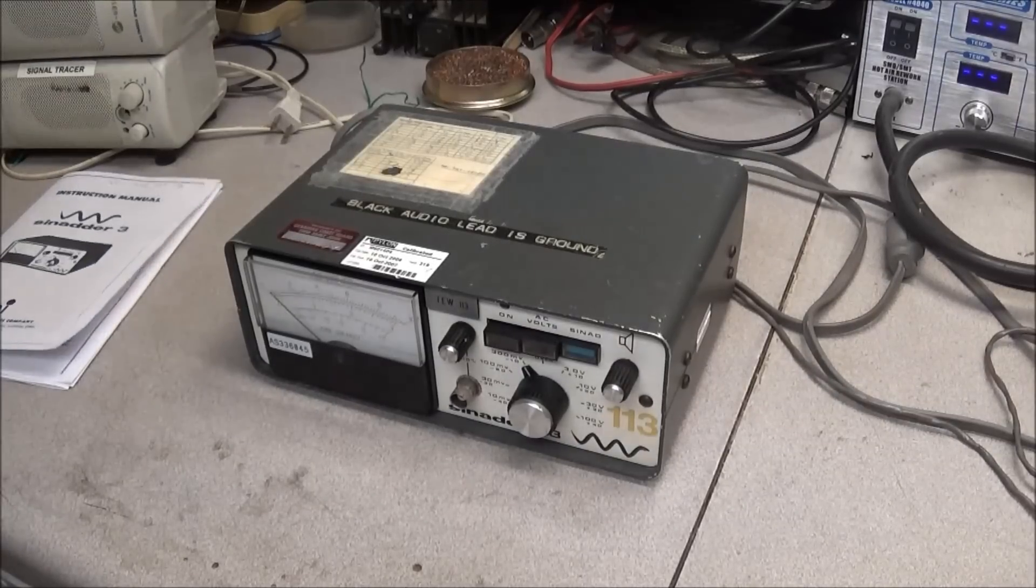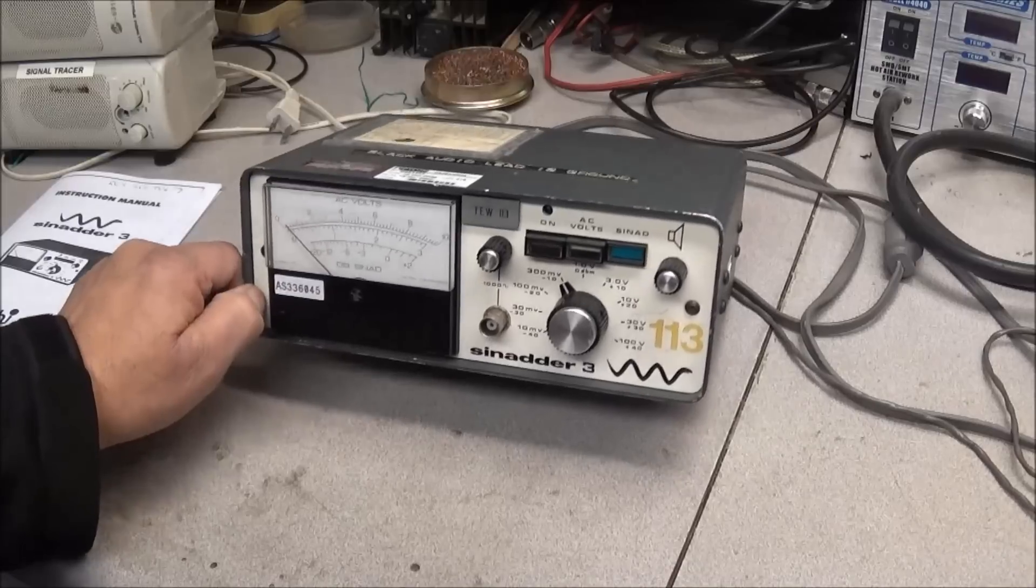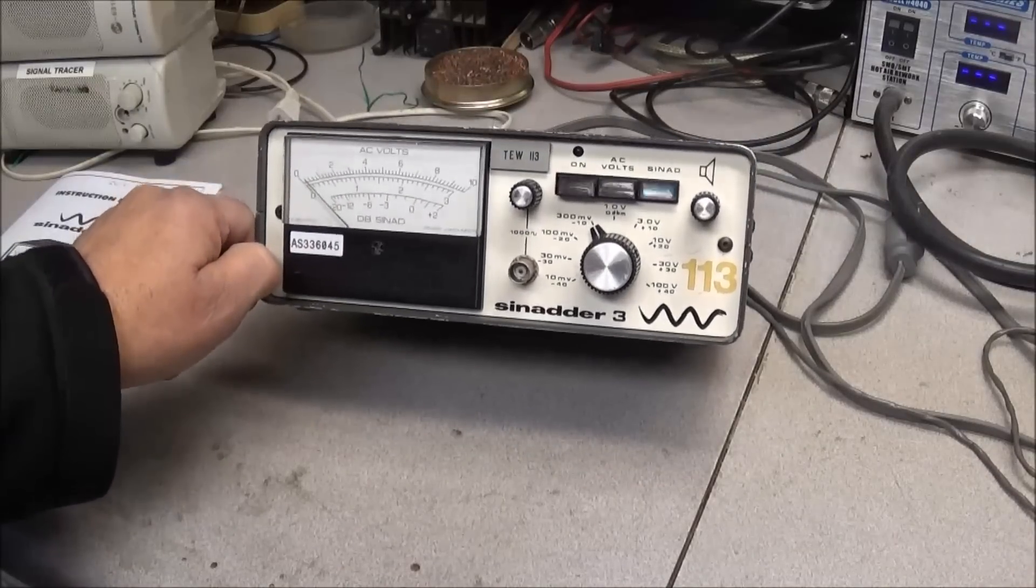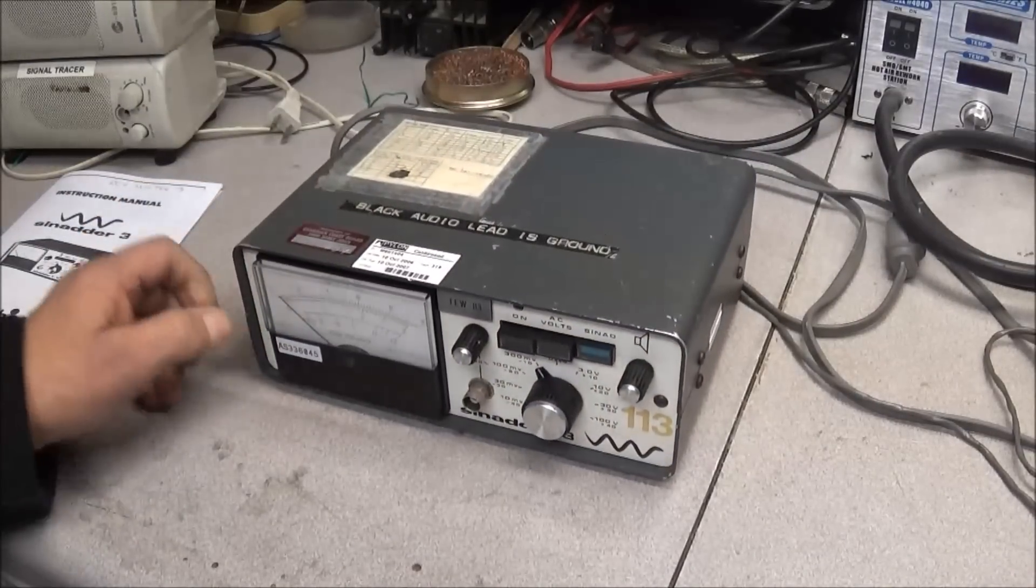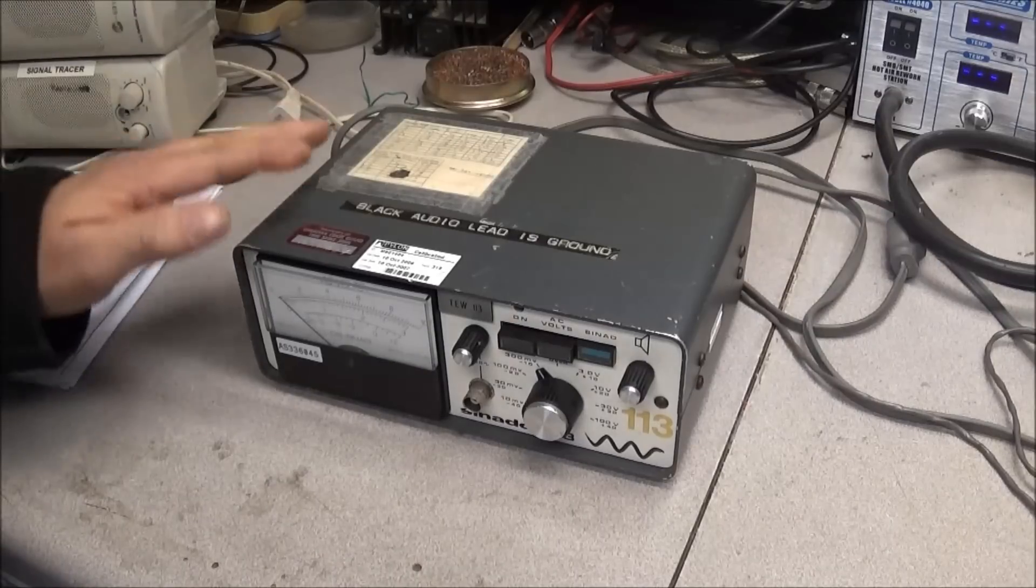As you can see, what Mike has sent me is a SINAD 3, and what this is used for, and he's already done a video on it I'll link to below, is used for adjusting the receiver sensitivity on a radio.